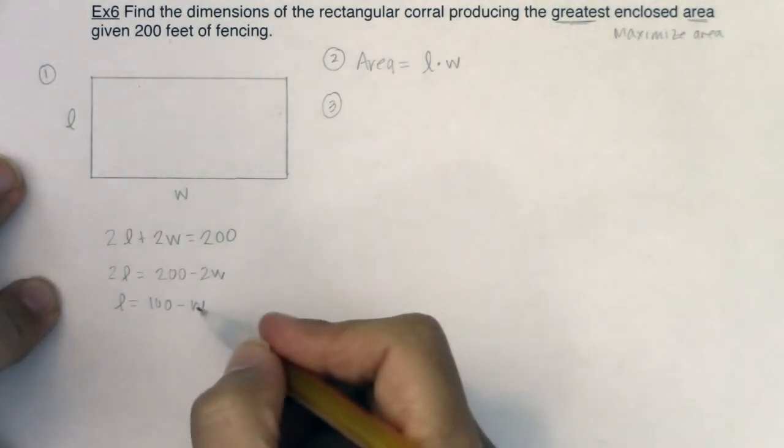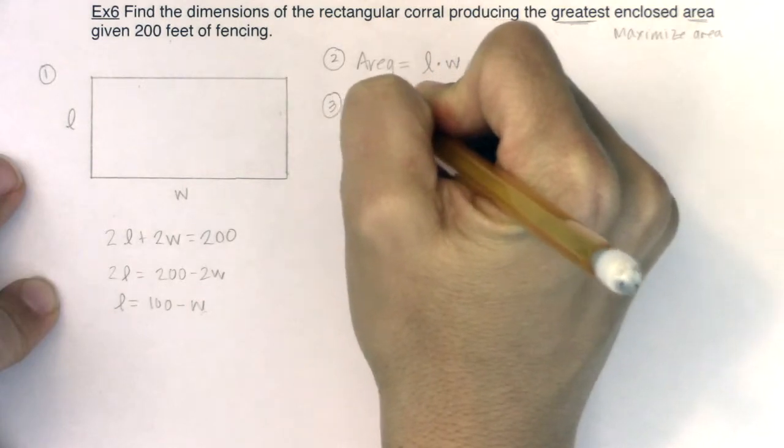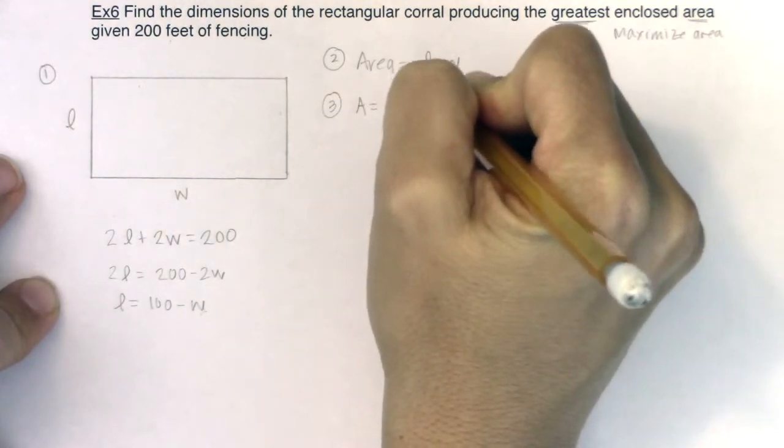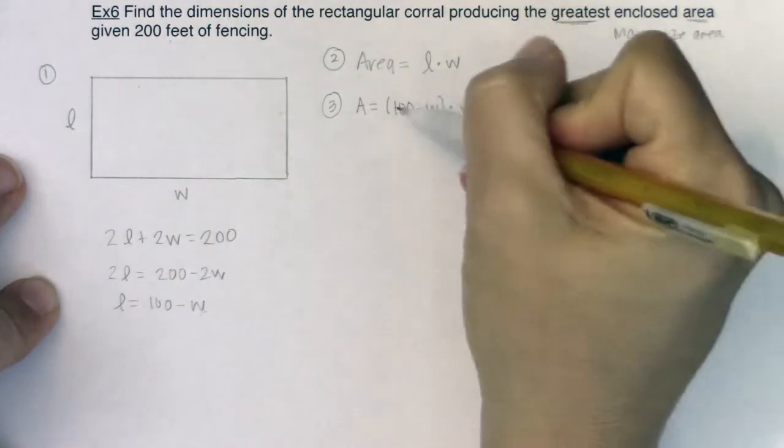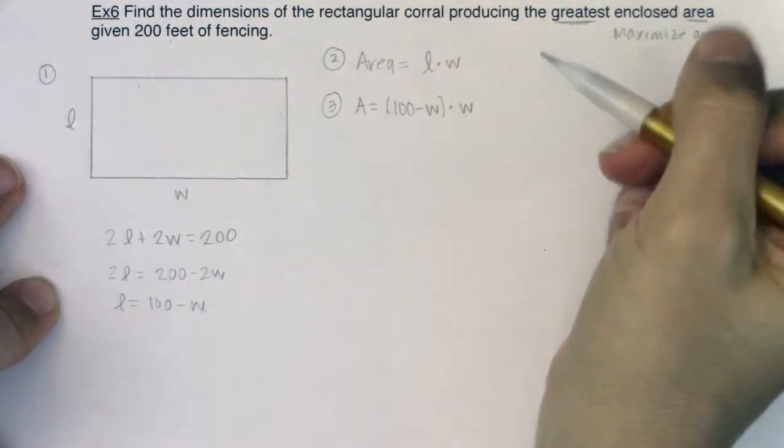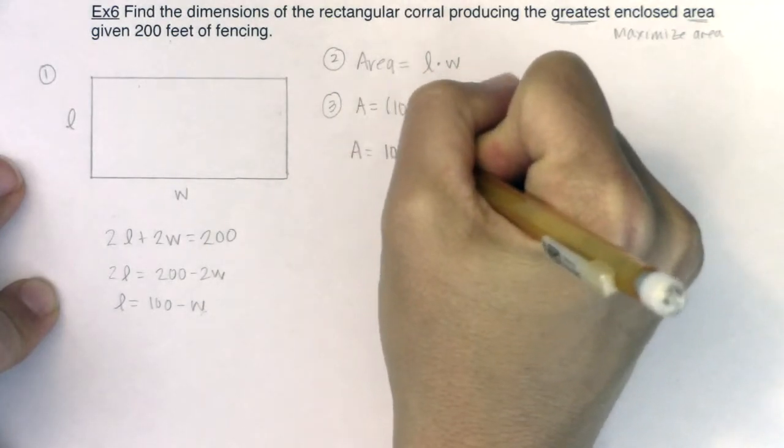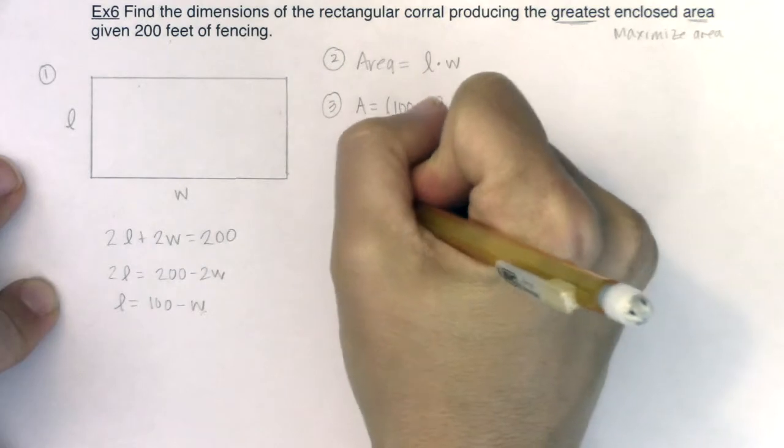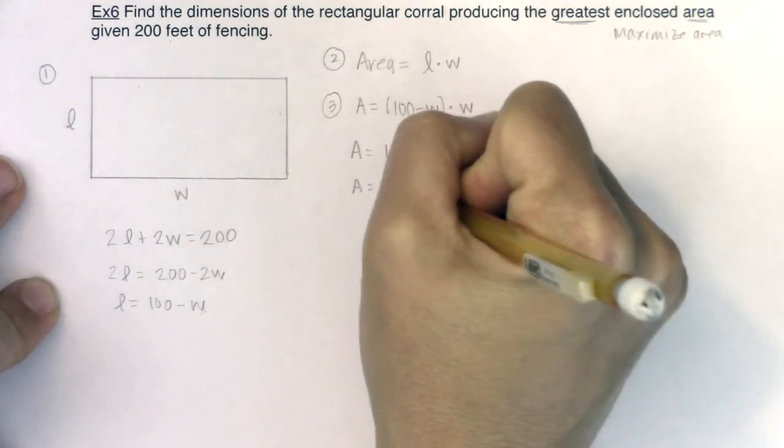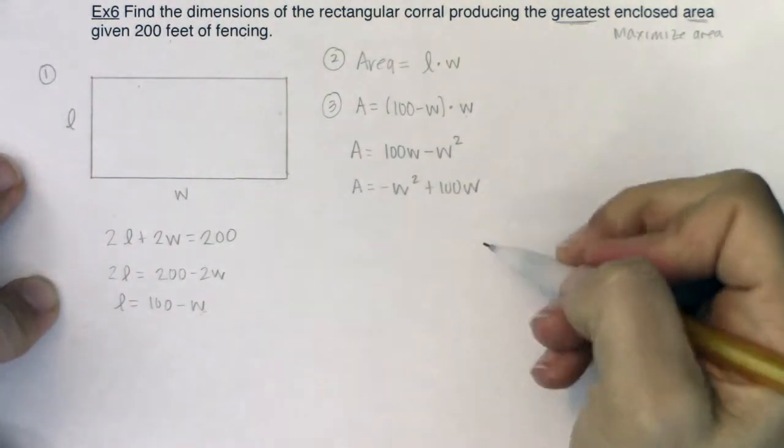So I'm going to take that expression or that substitution for L and sub it right in. So I will have A equals 100 minus W times W. Instead of length times width, it'll be 100 minus W times W. If I multiply this out, I'm looking at 100W minus W squared, or you could write that as negative W squared plus 100W. It doesn't matter which way you write it.